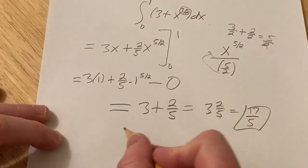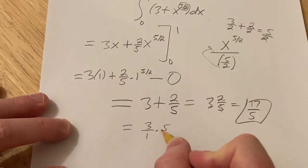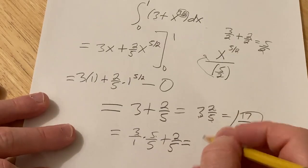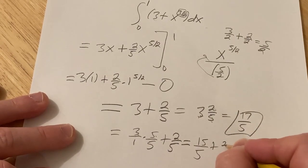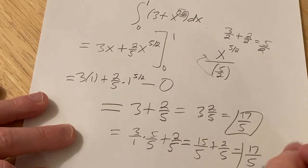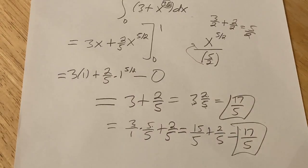Another way to do it is you can basically multiply it by 5/5. It's really 3/1, so 3 times 5 is 15, and then this is 2/5. This is 17/5, same answer. So yeah, pretty cool. I hope this video has been helpful. Good luck!